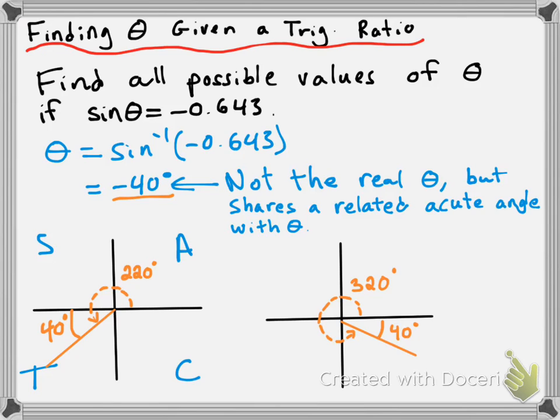So in other words, all the possible angles of theta, which are between 0 and 360 degrees anyways, for which the sine of theta is equal to negative 0.643, are going to be theta is equal to 220 degrees and theta is equal to 320 degrees.